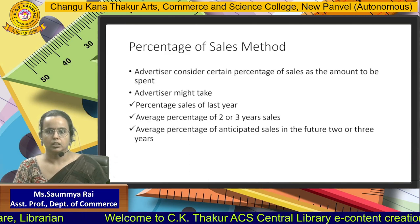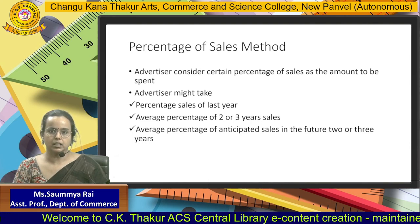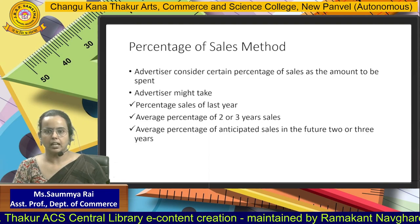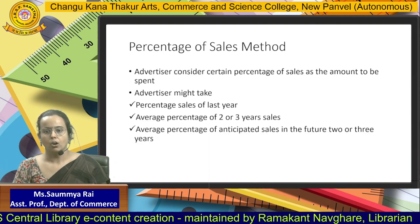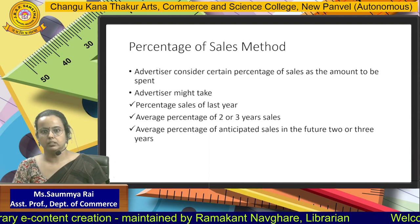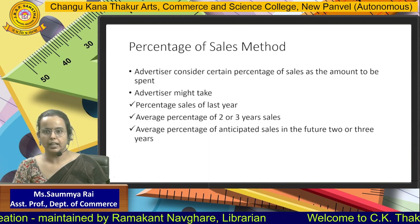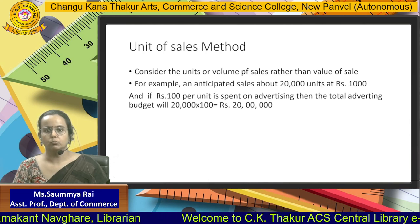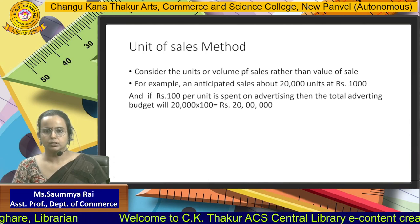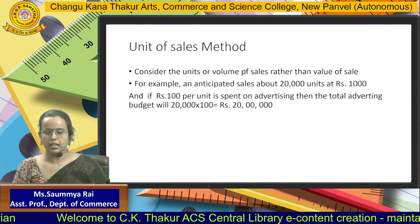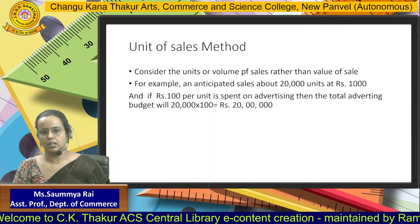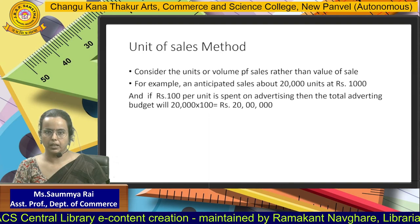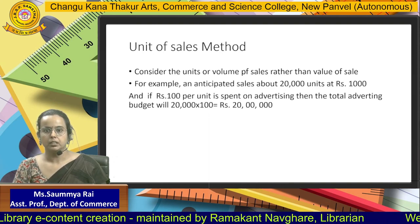The first is the percentage of sales method. Advertisers consider a percentage of sales as the amount to be spent on advertisement. They might take the revenue generated last year or last three years, or how much they expect to generate in the next two to three years, and decide their advertisement budget accordingly. Unit of sales is based on the volume of sales rather than the value. Suppose anticipated sales are 20,000 units at 1,000 rupees per unit, and management decides 100 rupees out of every 1,000 will be spent on advertisement — that becomes their budget.